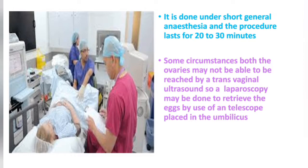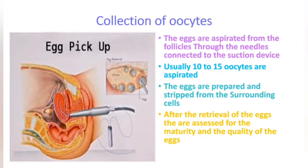In some circumstances, if both ovaries cannot be reached by transvaginal ultrasound, a laparoscopy may be done to retrieve the eggs using a telescope placed at the umbilicus. The eggs are aspirated from the follicles through needles connected to a suction device. Usually 10 to 15 oocytes are aspirated, then prepared and stripped from surrounding cells, and assessed for maturity and quality.